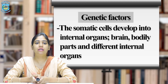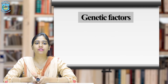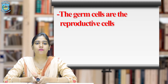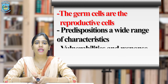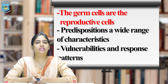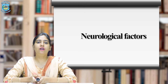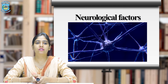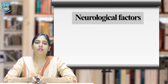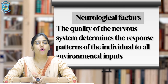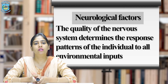The first factor for growth and development is physiological factors, which include genetic, neurological, glandular maturation and adaptive capability. There are two types of cells. The somatic cells develop into internal organs, brain, and different bodily parts. The germ cells are the reproductive cells which transmit traits, predispositions, a wide range of characteristics, vulnerabilities and response patterns.